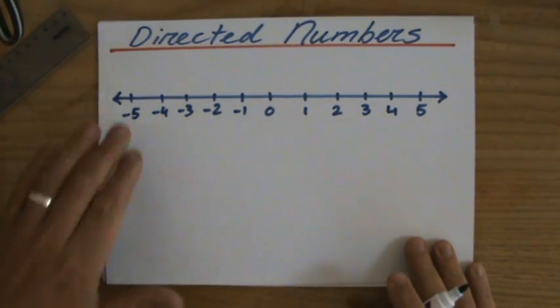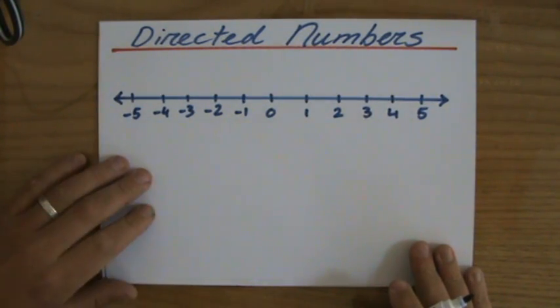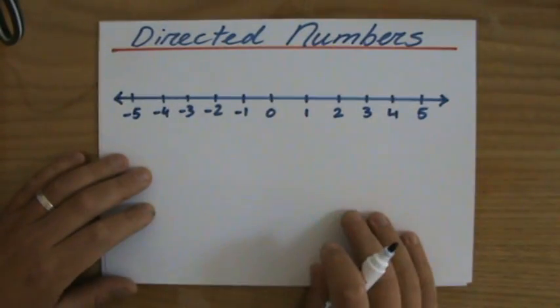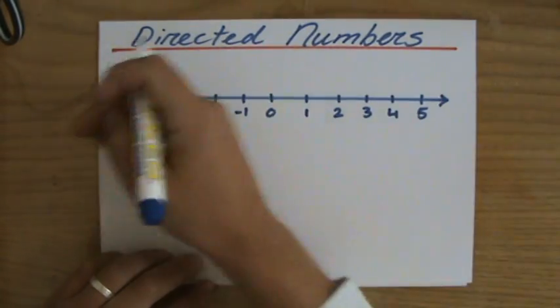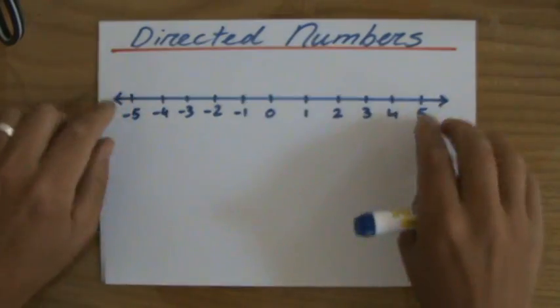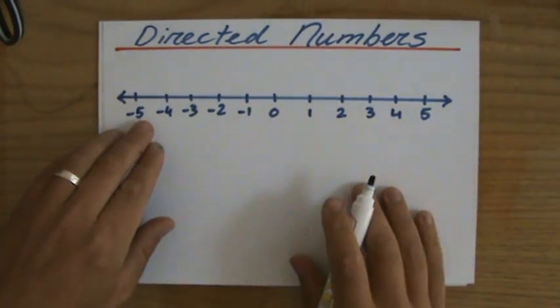I'd like to briefly talk with you about directed numbers. Directed numbers have a direction - they either go to the right or they go to the left. I've constructed this number line, and of course it goes on and on. After 5 you get 6, 7, 8, and before -5 you get -6, -7.